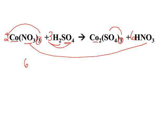A quick check: two cobalts and two cobalts, two times three or six nitrates and six nitrates, three sulfates and three sulfates, six hydrogens and six hydrogens — and we are correctly balanced.